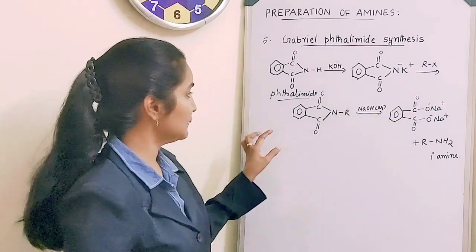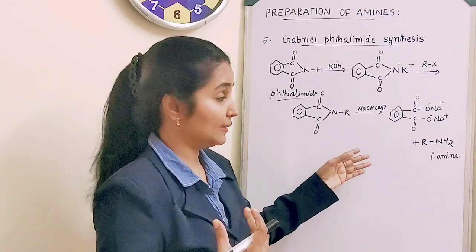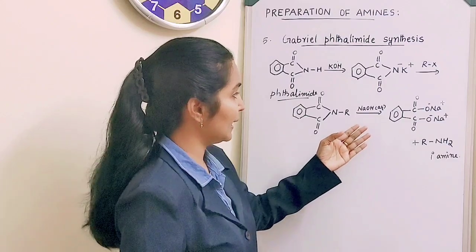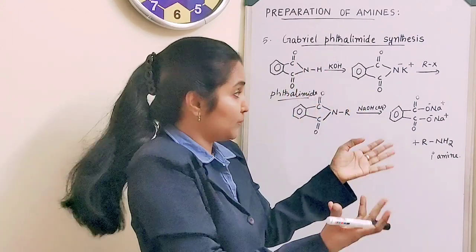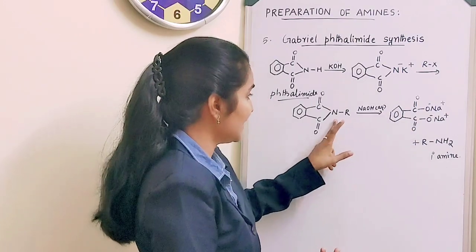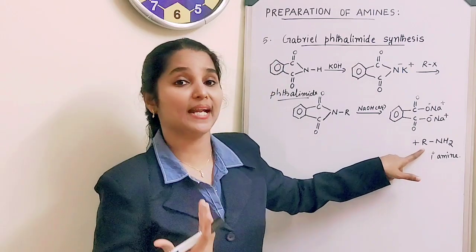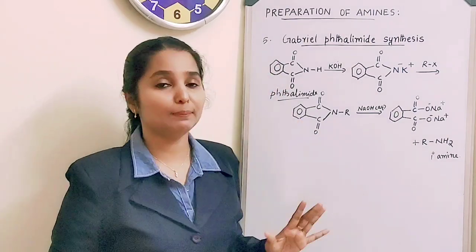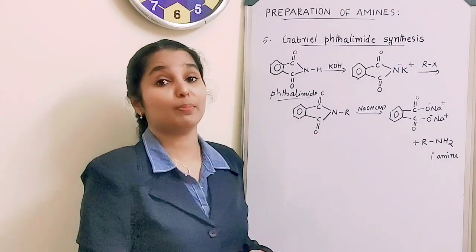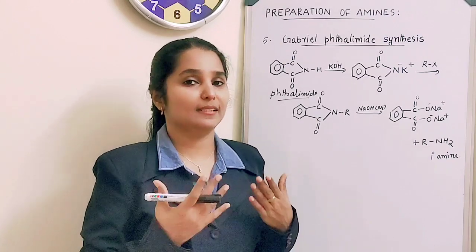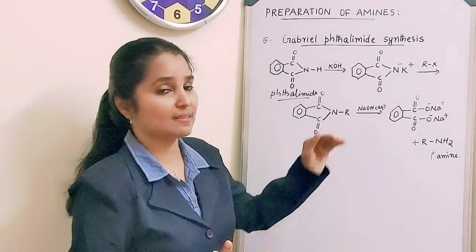N-alkyl phthalimide undergoes alkaline hydrolysis with aqueous NaOH — the ring opens up — and the primary amine R-NH₂ is formed. This method is used only for the preparation of aliphatic primary amines, not aromatic primary amines. Gabriel phthalimide synthesis is specifically for aliphatic primary amines, and knowing the phthalimide structure lets you derive the reaction without difficulty.